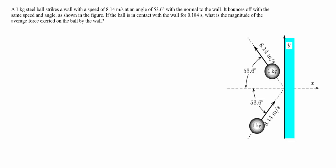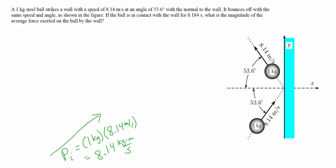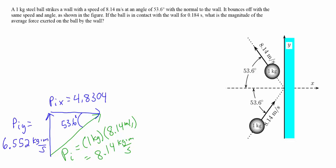The initial momentum of the ball is the mass, one kilogram, times the velocity, 8.14 meters per second, giving an initial momentum of 8.14 kilogram meters per second. From the diagram, the angle the velocity makes with the x axis is 53.6 degrees. Using sines and cosines, the x component of momentum is 4.8304 kilogram meters per second in the positive x direction, and the y component is 6.552 kilogram meters per second upward.